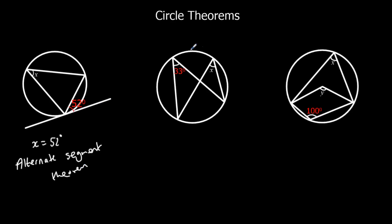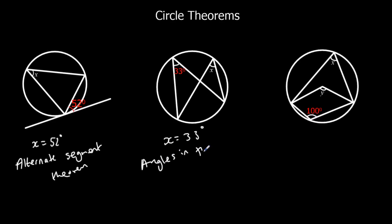And the second one: we've got two angles from the same segment. So x is 33 degrees, because angles in the same segment are equal.